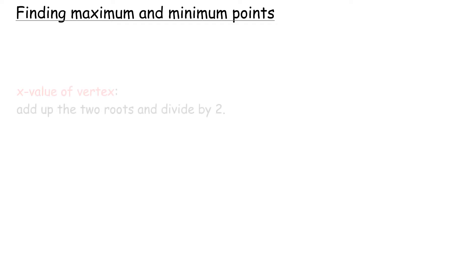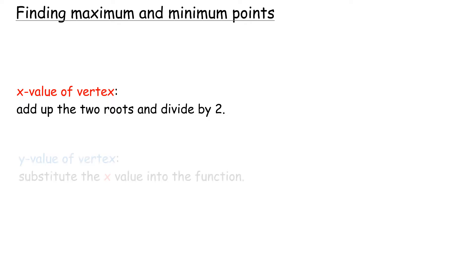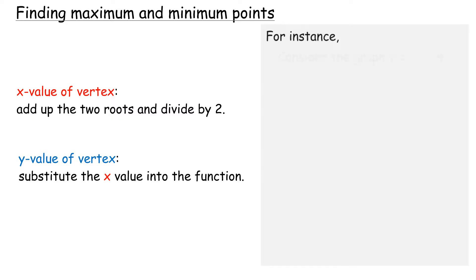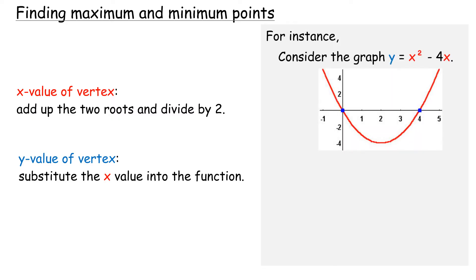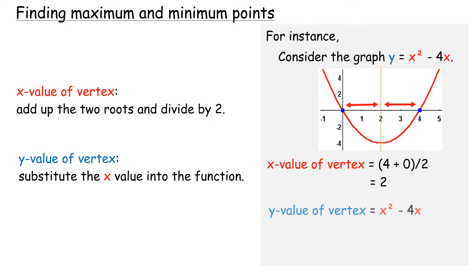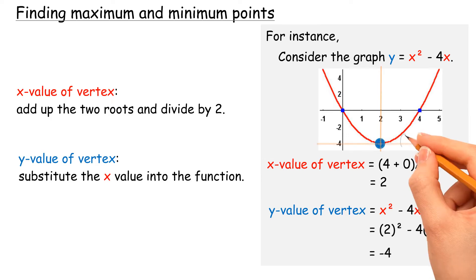Finding maximum and minimum points: in order to find the x value of the vertex, we add up the two roots and divide by two. To find the y value of the vertex, we substitute the x value into the function. For instance, consider the graph y equals x² minus 4x. The x value of vertex equals 4 plus 0 divide by 2, equals 2. The y value of vertex equals 2² minus 4 times 2, equals negative 4.